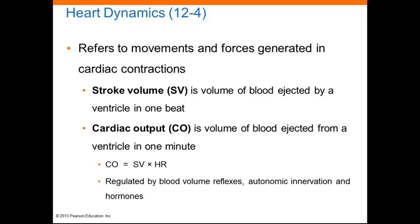Cardiac output is precisely regulated so that peripheral tissues receive an adequate blood supply under a variety of conditions. The major factors that regulate cardiac output include blood volume reflexes, autonomic innervation, and hormones.